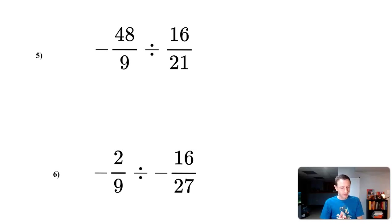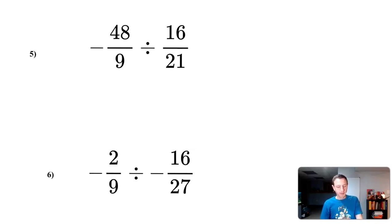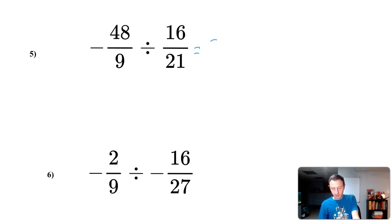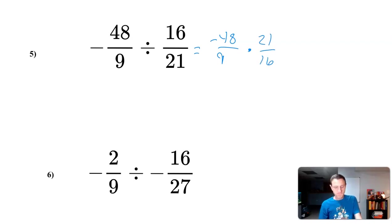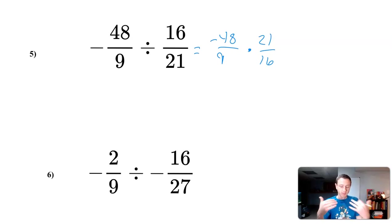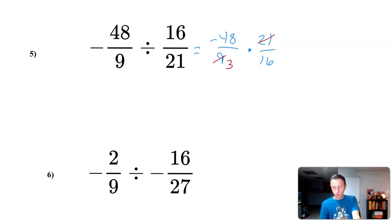Now a more complicated one: negative 48 over nine divided by sixteen over twenty-one. That looks scary — lots of numbers and a negative — so let's go step by step. Change division to multiplication: negative 48 over nine times the reciprocal of sixteen over twenty-one, which is twenty-one over sixteen. Looking at nine and twenty-one: three goes into nine and three goes into twenty-one, so divide both by three. Nine divided by three is three, twenty-one divided by three is seven.